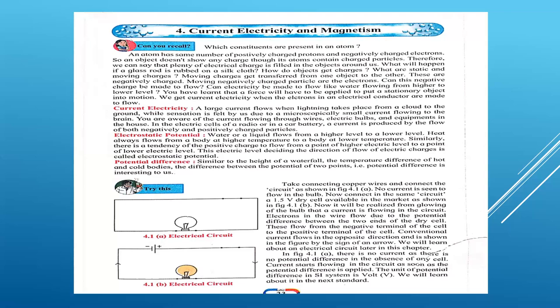Like potential difference, electric current is also a scalar quantity. Its unit is ampere. So keep in mind: electric current is the flow of charged particles or the flow of electrons. The unit of electric current in the SI system is ampere, or you can say coulomb per second.